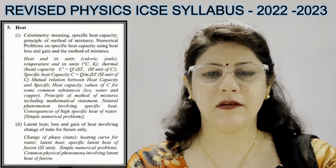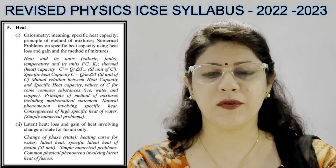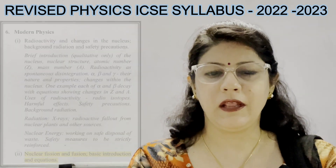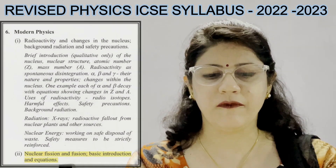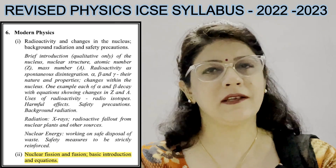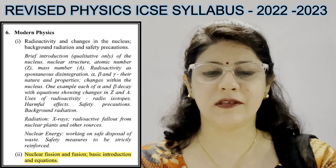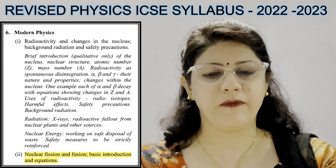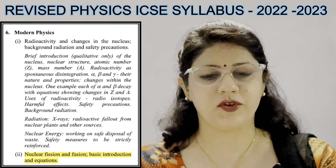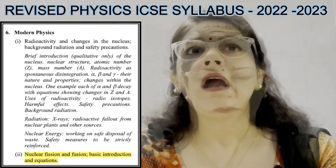From the unit on Heat, there is no change. In the last unit, Modern Physics, the last exercise is again excluded this year, as it was in the previous year. This covers nuclear fission and fusion — basic introduction and equations.